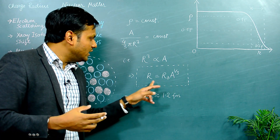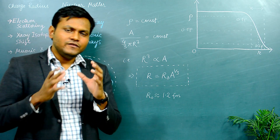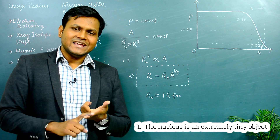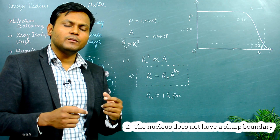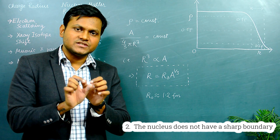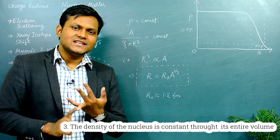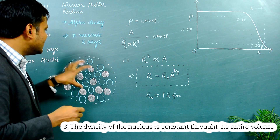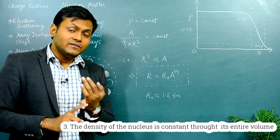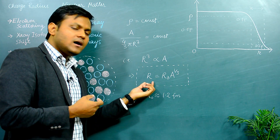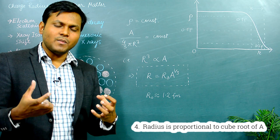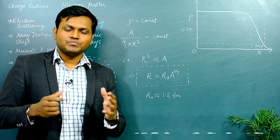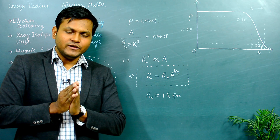To summarize the key takeaways from this video: first, the nucleus is an extremely tiny object; second, the nucleus does not have a sharp boundary but rather diffuses over a distance; third, the density of the nucleus is nearly constant throughout its entire volume, which tells us about the nature of the nuclear force; and finally, we have derived the relation R = R₀ A^(1/3), showing that the nuclear radius is directly proportional to the cube root of the mass number.